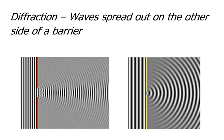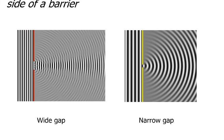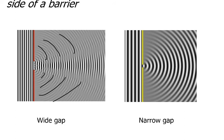Diffraction is when waves spread out on the other side of a barrier or hole. An important feature is the difference between a wide gap and a narrow gap. On the other side of a gap in a barrier, you might think the waves would just travel straight through the corridor with nothing filling the sides — but that's not what happens. With a wide gap, the waves stay fairly flat in the middle but curve around the corners, bending to fill in the area behind the barrier.